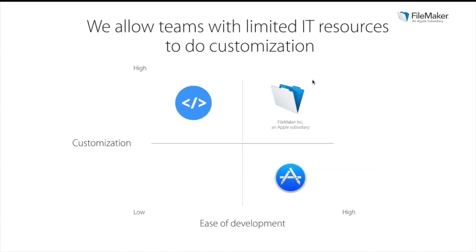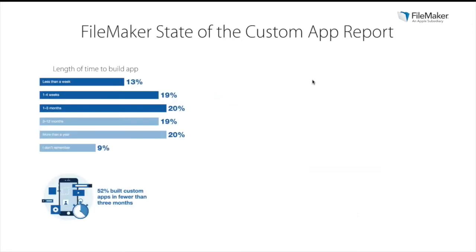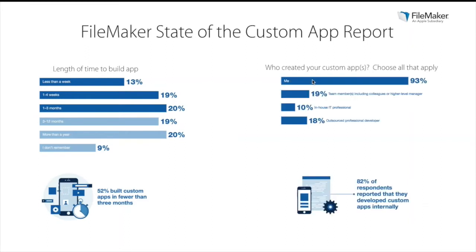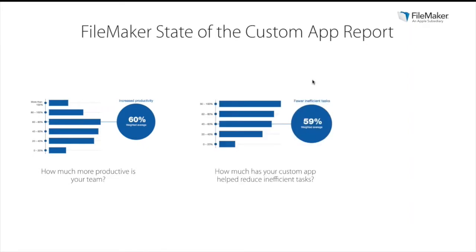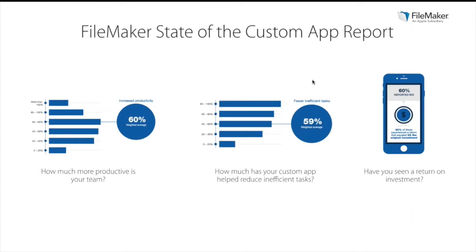FileMaker's recent State of the Custom App report shows that 52% of respondents built a solution in less than three months, and 93% helped build or built one or more FileMaker custom apps in their business. FileMaker allows teams with limited IT resources to do custom development. 74% of respondents saw an increase in productivity for an average 60% boost in production levels, while 81% saw a reduction in inefficient tasks. Then 60% of respondents saw a return on investment, with 20% equaling two times the original investment.